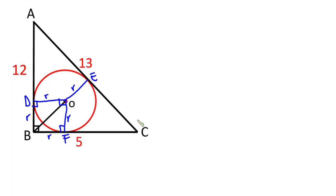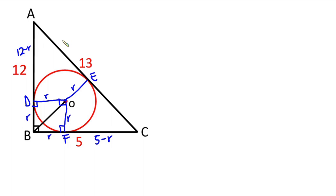From the right angle triangle ABC, the distance from A to B is 12 units, the distance from B to C is 5 units, and the distance from A to C is 13 units. So if I want the distance from C to F, having known that BC is 5, I'm going to subtract R from 5. Then since AB is 12, if I want AD I'll just subtract R from 12. One important thing to note is that the lengths of tangents from an external point to a circle are equal.